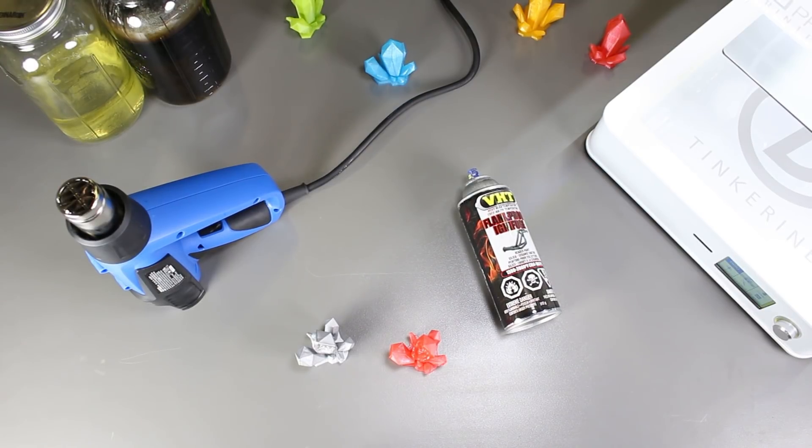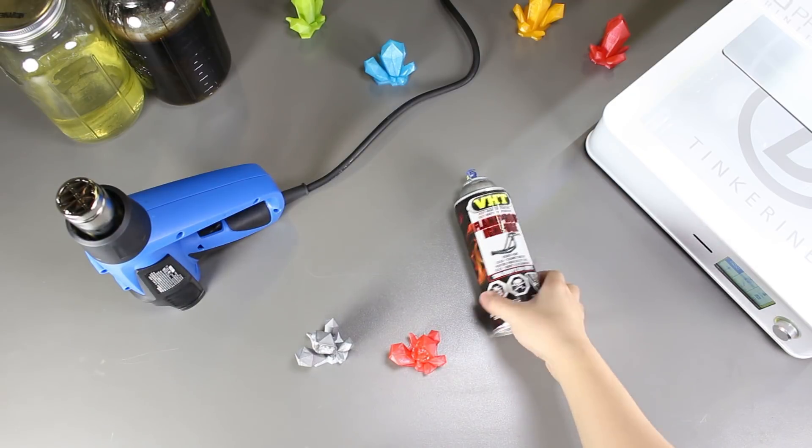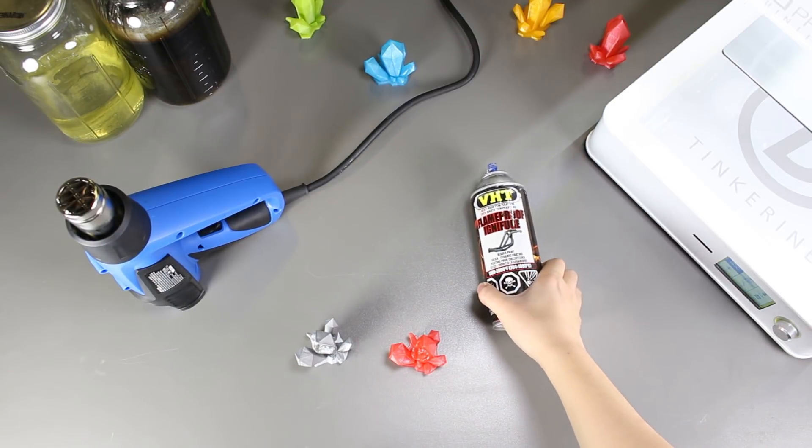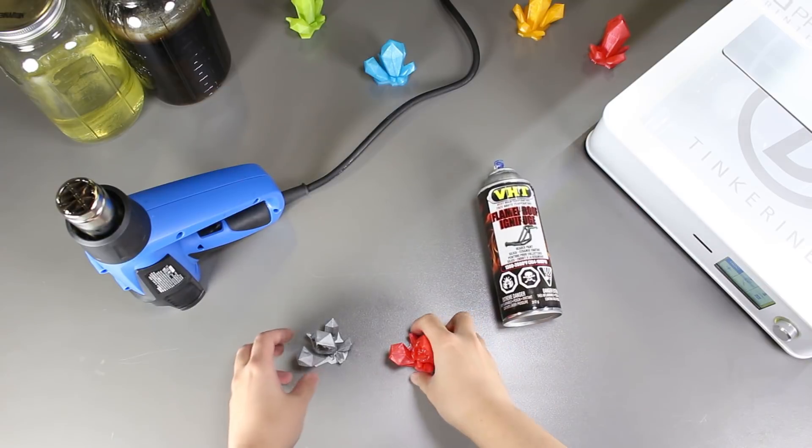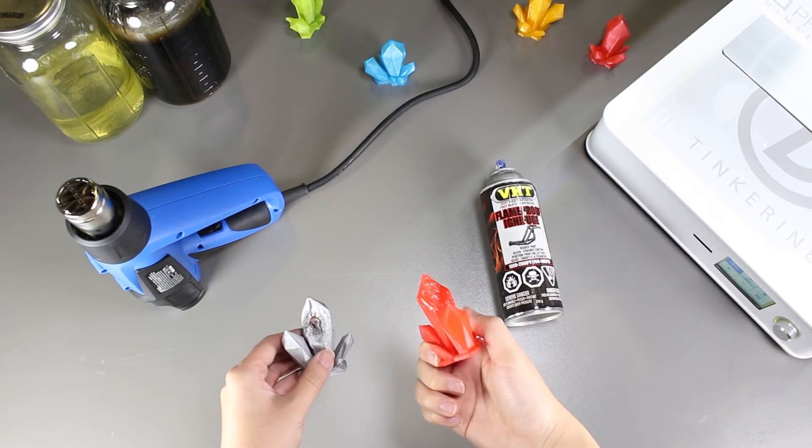Well, there we have it. We used a coat of ceramic paint on a model and it seems like it doesn't help with the overall heat resistance of the 3D printed PLA model.